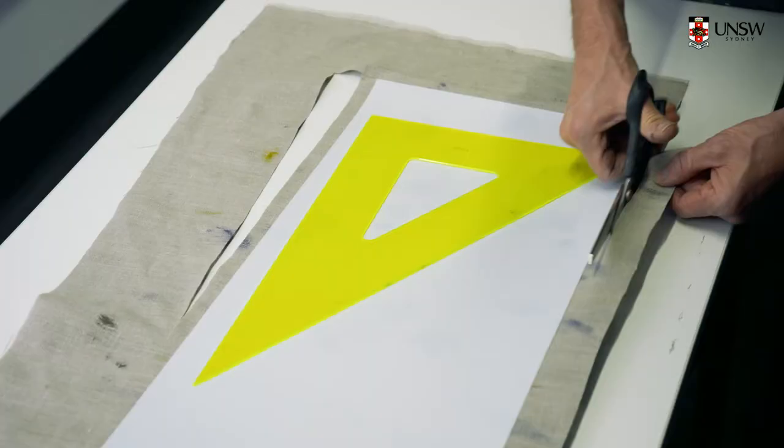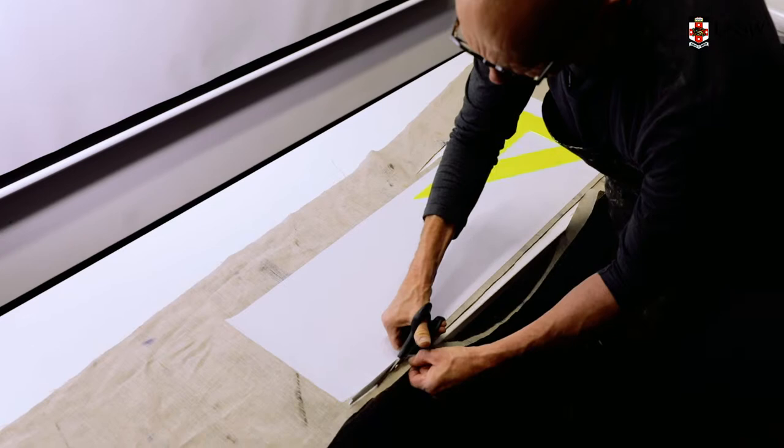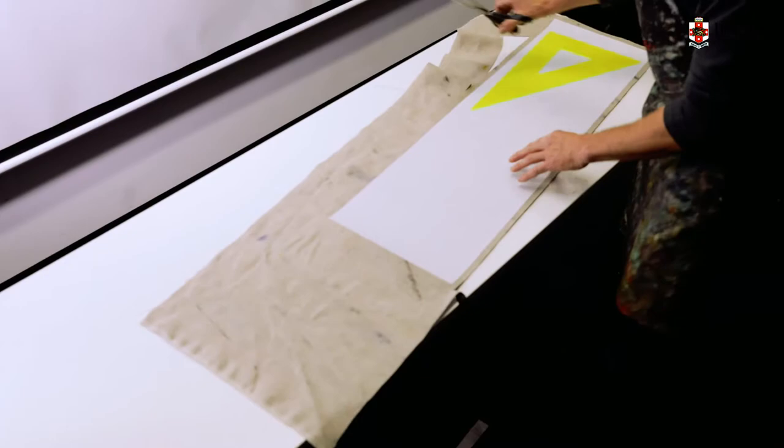This extra portion on the side is the piece that's going to wrap around the metal rings of the lampshade.